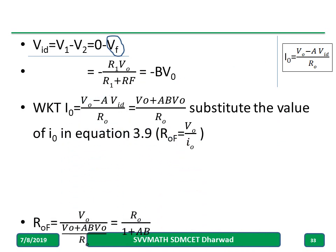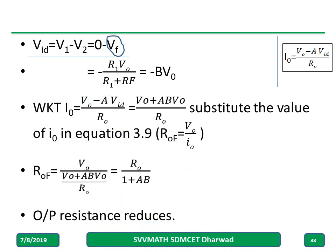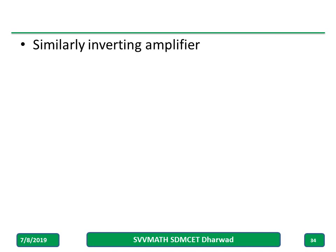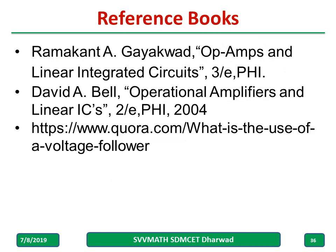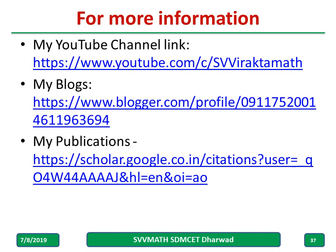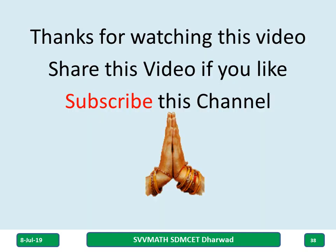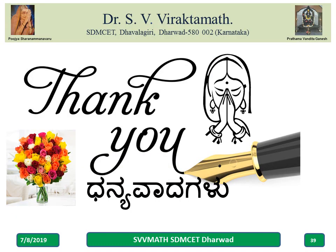A separate video may be available on YouTube for detailed explanation. You should know that output resistance reduces due to feedback and input resistance increases. Similarly, we can do the derivation for the inverting amplifier also. In summary, we have discussed these three circuits — voltage follower, inverting, and non-inverting amplifier — and what to observe during the experiment. For more information, you can visit the references. If you like this video, please share with your friends. Thank you.